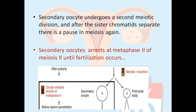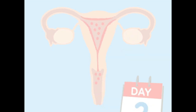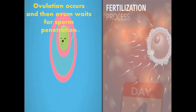The first polar body may or may not undergo a second meiotic division and then disintegrates. The secondary oocyte undergoes the second meiotic division, but after the sister chromatids separate, meiosis ceases again at metaphase two of meiosis two. The oocyte remains arrested at metaphase two until fertilization occurs. For fertilization to take place, a mature oocyte must first be released from the ovary — a process called ovulation.